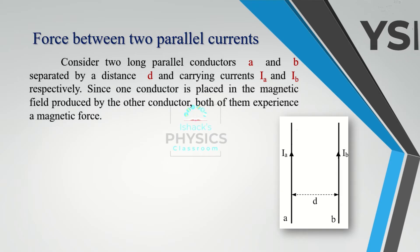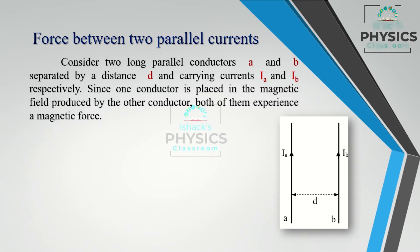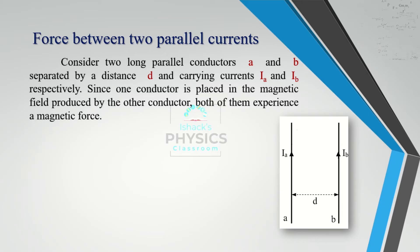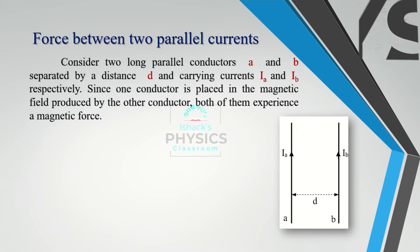Conductor A carries current Ia and conductor B carries current Ib. Using the right-hand thumb rule for the current Ia passing through conductor A, the thumb points in the direction of current and the closed fingers indicate the direction of the magnetic field.